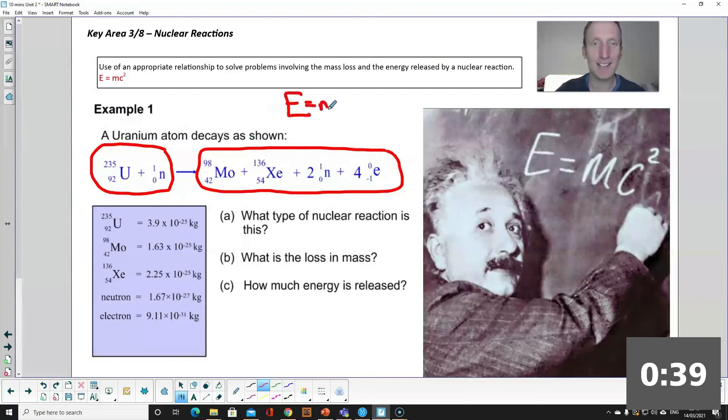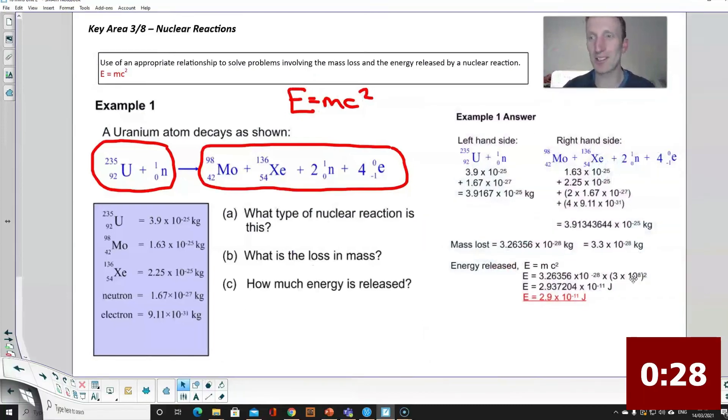C is the speed of light and E is the energy released in the reaction. If you want to have a go at this question pause the video and here's the answer for you.